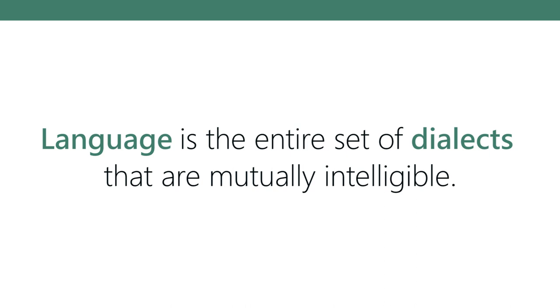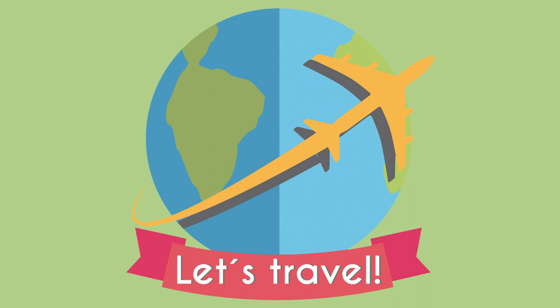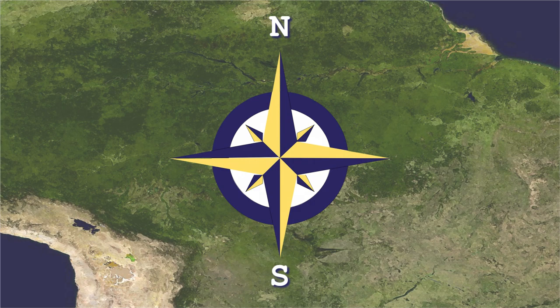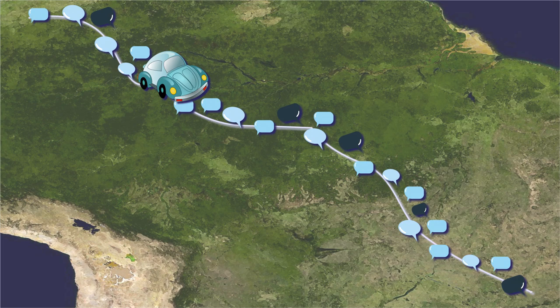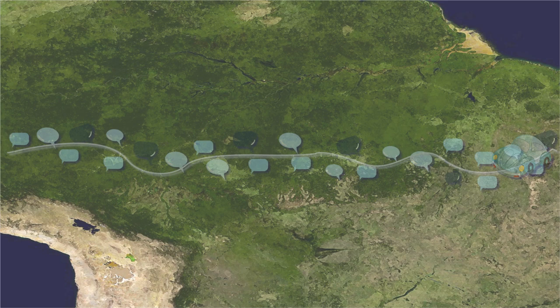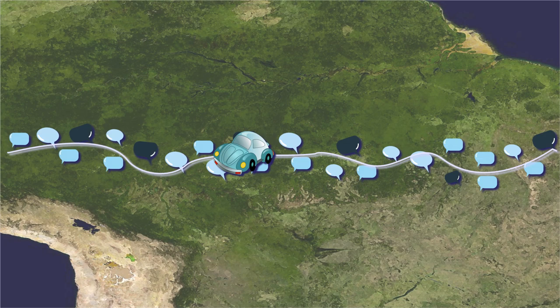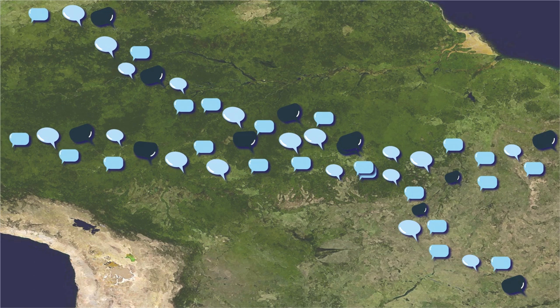Let's do a thought experiment. Imagine a hypothetical country from north to south and east to west, with about 25 different dialects from north to south. You start walking from the north, recording dialects as you go. Then you go to the easternmost part and walk west, recording another 25 or 26 dialects — giving you around 51 or 52 dialects total in this country.